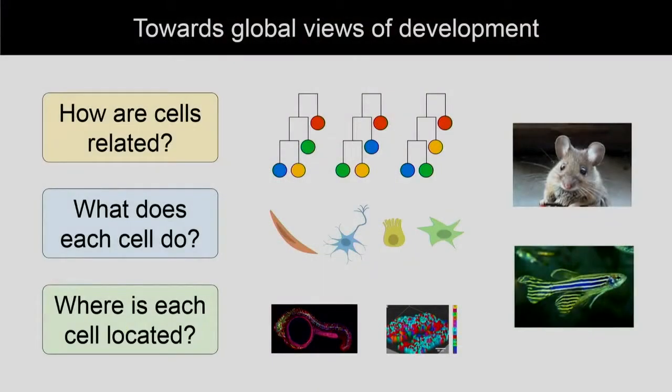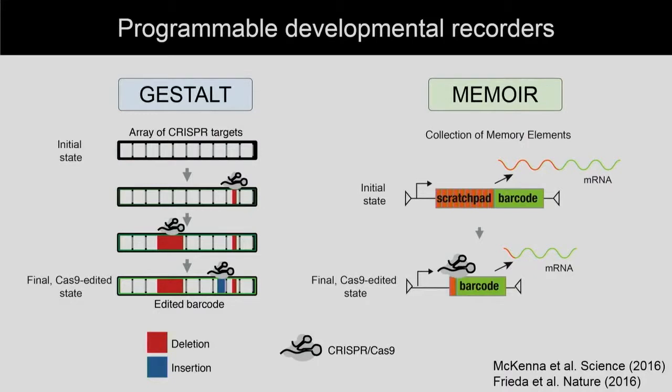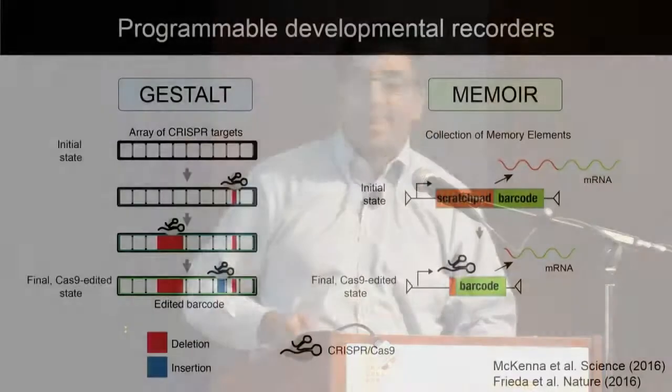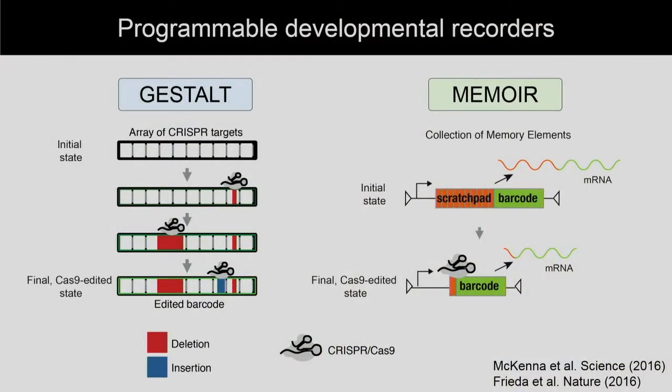I'm going to frame what we're doing in three subtopics: first is lineage; second, how do we get to cell functions within that lineage; and lastly, how do we get to spatial information. Starting with lineage — last year, our group together with Alex Scheer's group, as well as Michael Elowitz's group together with Long Kai, published papers using CRISPR-Cas9 editing in vivo during development as a means of recording cell lineage. I'll focus on Gestalt now and come back to Memoir and its particular advantages later.